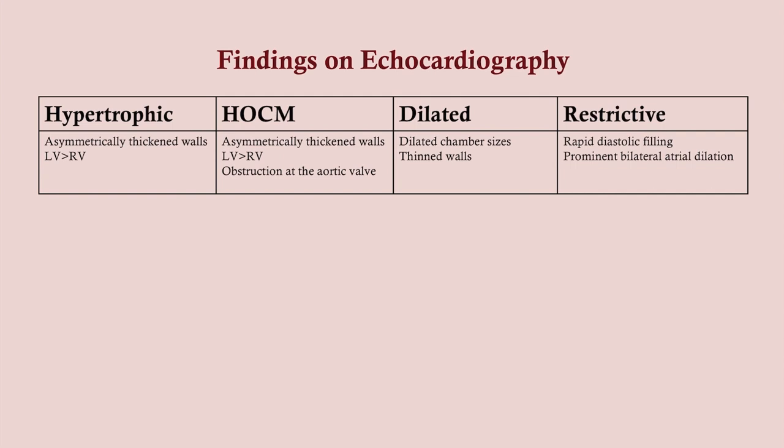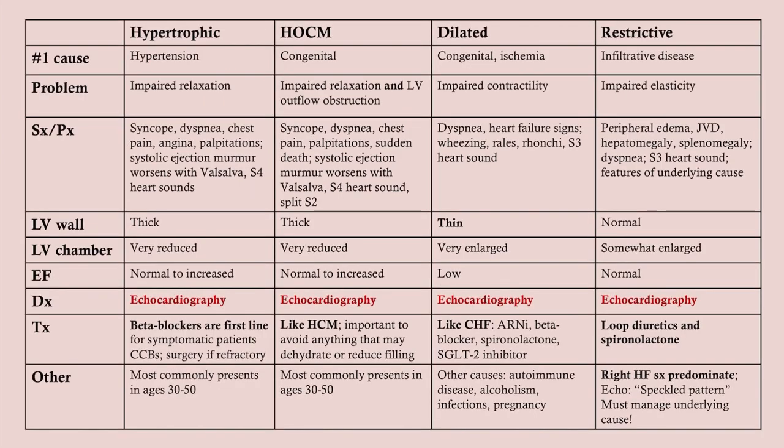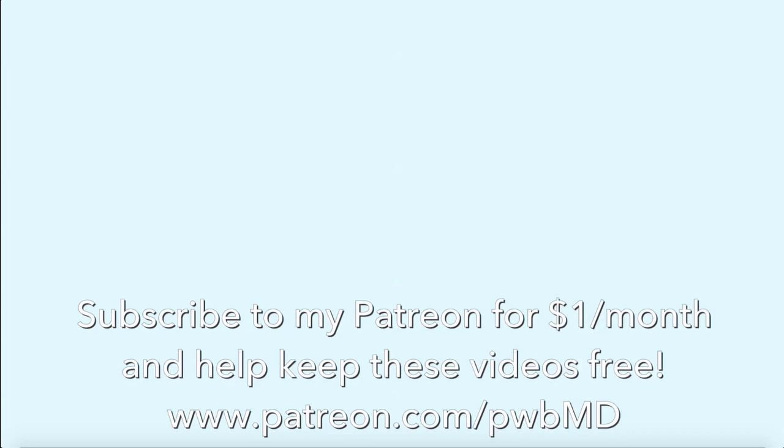These are the echo findings for each cardiomyopathy all on one page — remember these, as echo is the more specific test. This is what you would see on EKG, which is lower yield. And finally, here is everything summarized on one page.